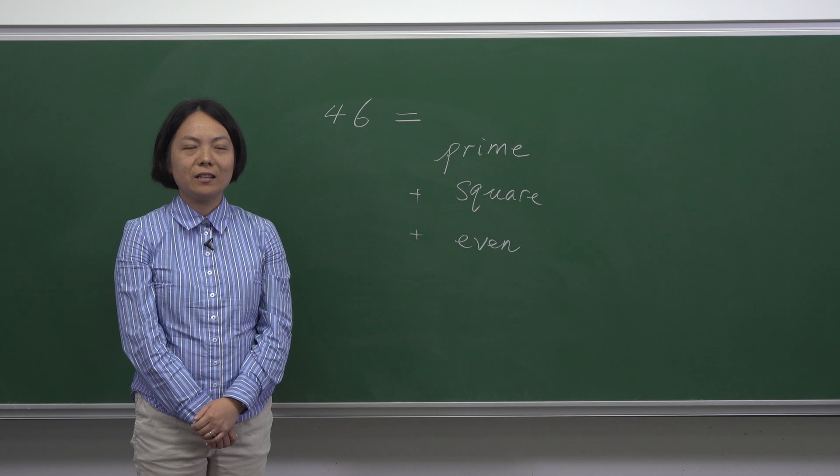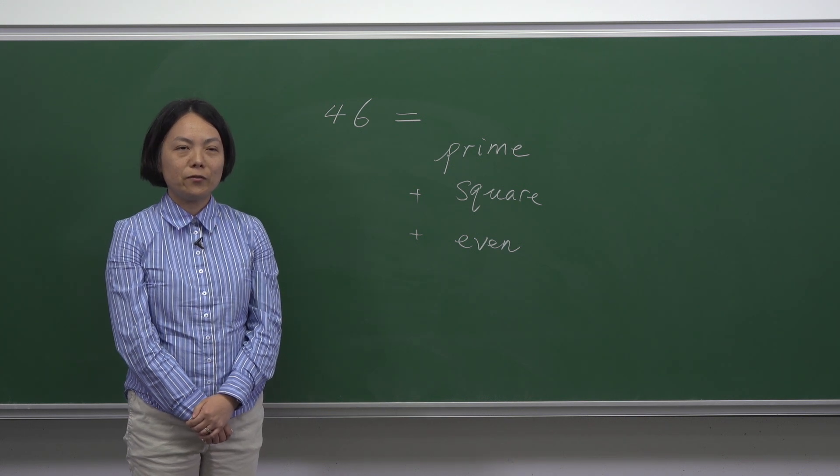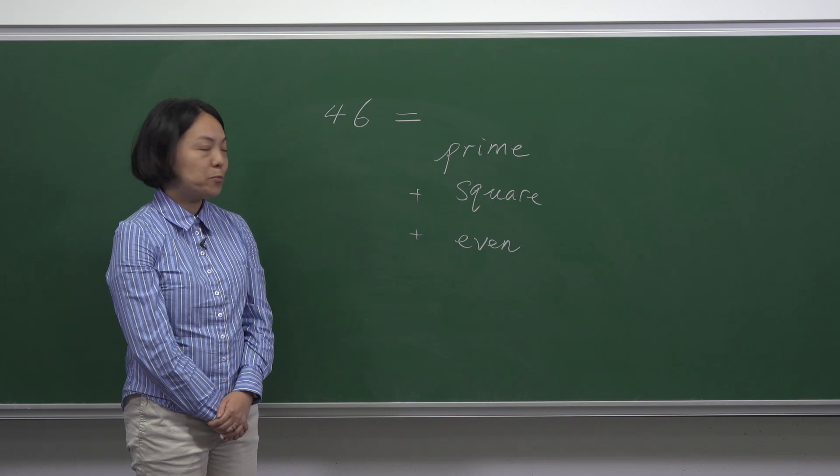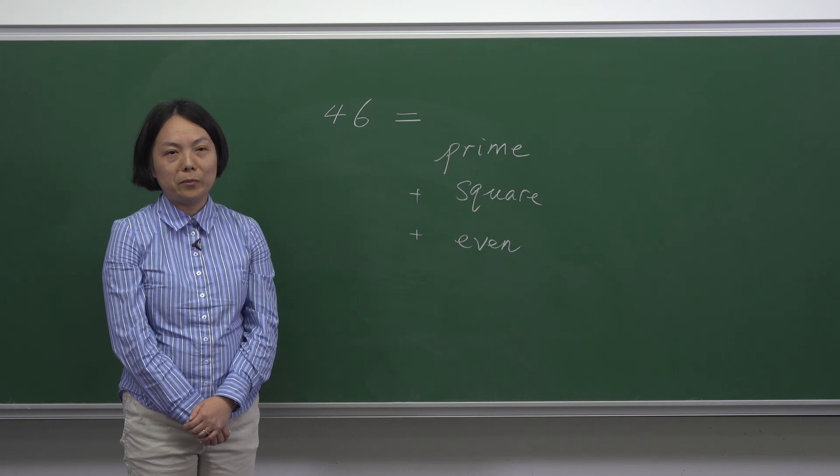We are told that 46 is the sum of three numbers and they are all two-digit numbers. One is prime, one is square, and one is an even number.